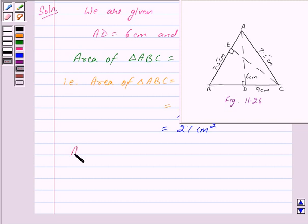So we also have area of triangle ABC = 1/2 × base AB × height CE.